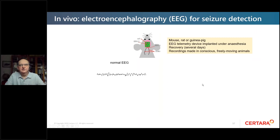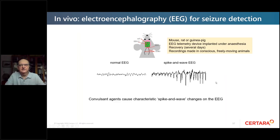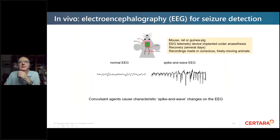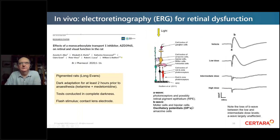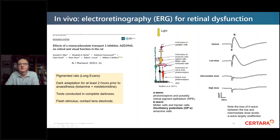For electrophysiology recordings, EEG in rodents and other species is particularly useful to detect seizure-inducing effects of drugs — showing a typical spike and wave response to a seizure-inducing drug. Electroretinography (ERG) produces a characteristic response: the A-wave is hyperpolarization of the photoreceptors, and the B-wave represents Müller cells and bipolar cells. This diagnoses which cell types in the retina are being affected — for example, at intermediate and high dose the B-wave disappears, indicating effects on bipolar cell transmission.